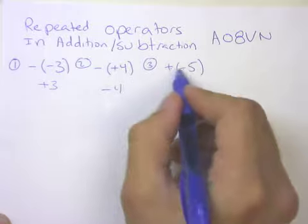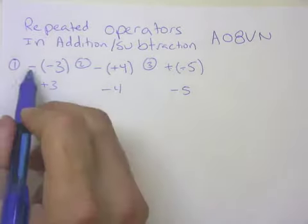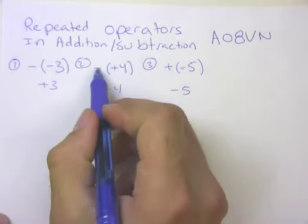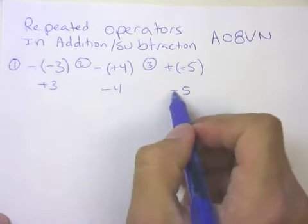You can simplify these repeated operators as if they were multiplication. A negative times a negative makes plus, a negative times a plus, a positive makes negative, a positive times a negative makes negative.